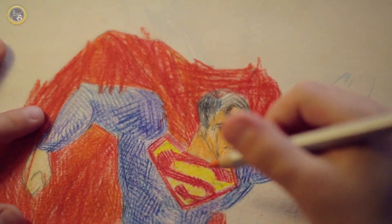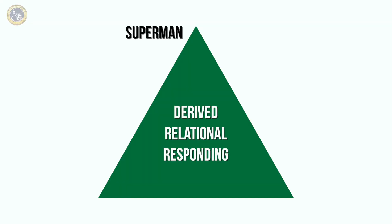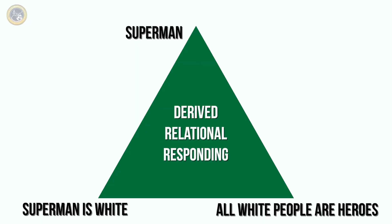The last one is a bit more complex but will resonate with most people: derived relational responding. Think of it as a triangle. Superman is a fictional comic book hero — that's one leg. Superman also happens to be white. So if Superman is a hero and Superman is white, then white people must be heroes. That's all derived relational responding means. This example is positive, but you can also make those derived relational connections with negative relationships as well.